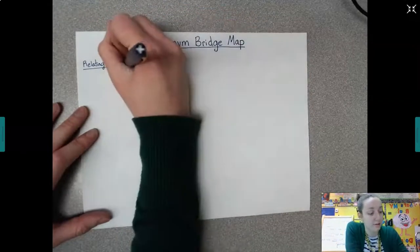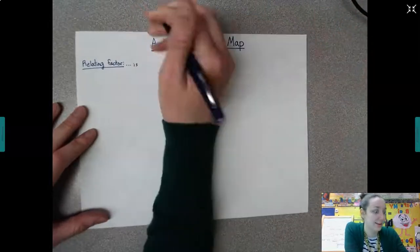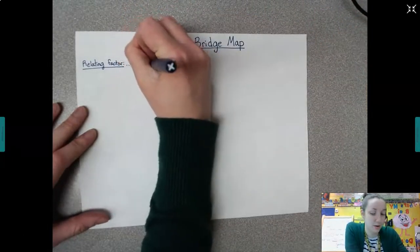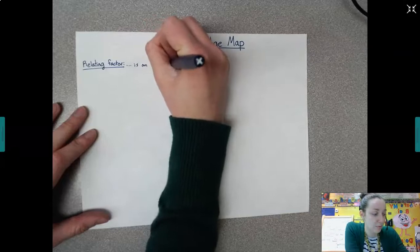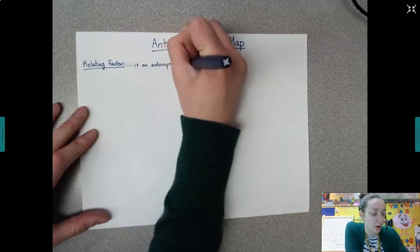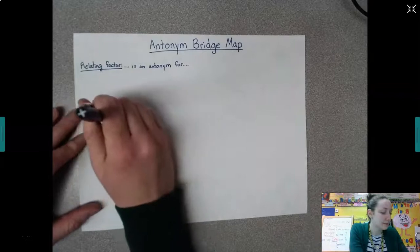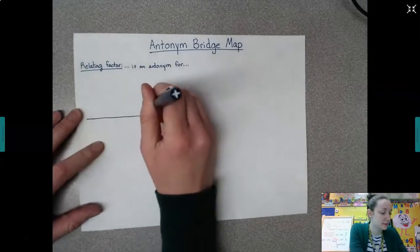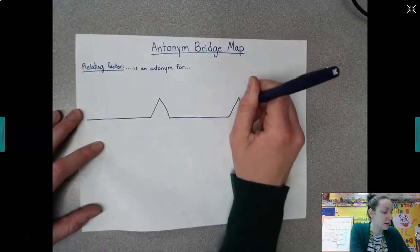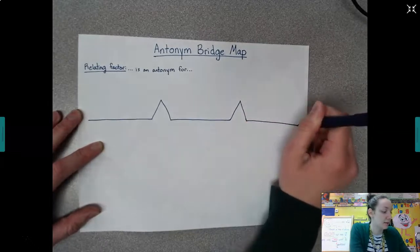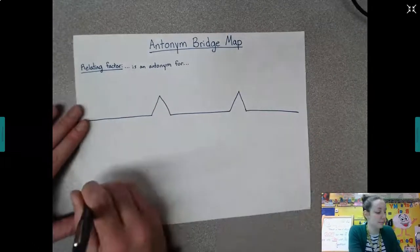Our relating factor is 'is an antonym for.' Remember, the relating factor shows what the line is saying. So this line is saying: is an antonym for. We're going to do six today.